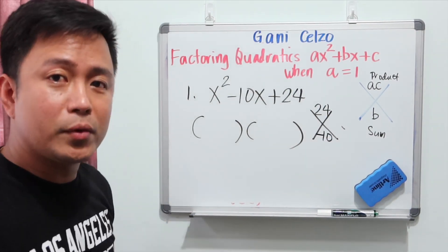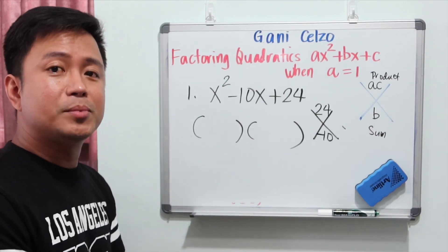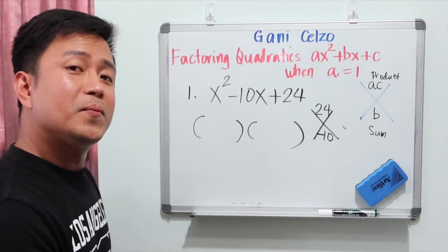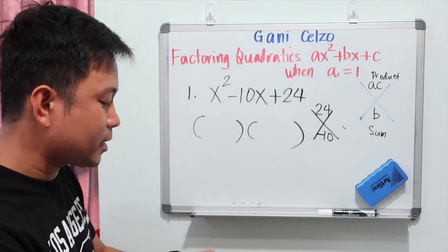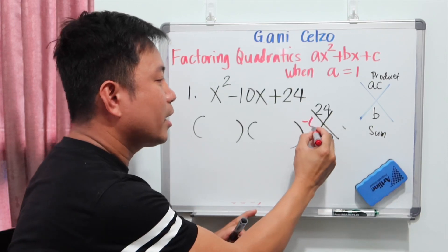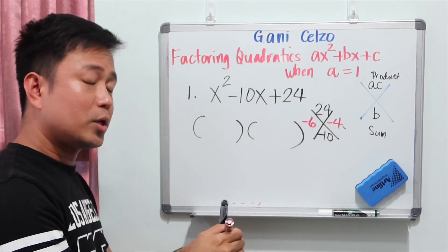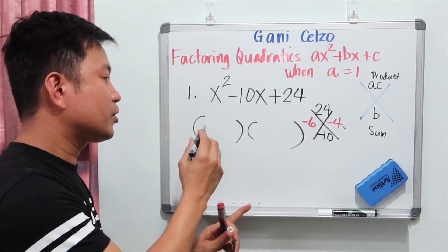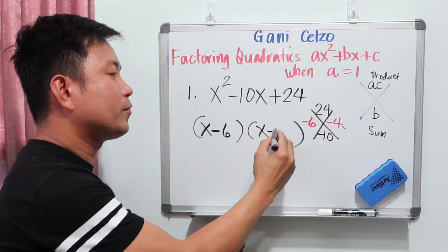What are the two numbers that multiply to 24 and add up to negative 10? It's negative 6 and negative 4, because negative 6 times negative 4 is positive 24, and when you add them it's negative 10. So the factors are x minus 6 and x minus 4.